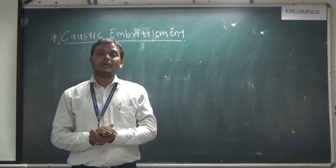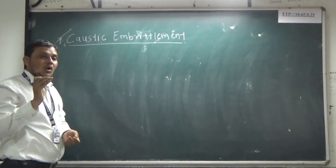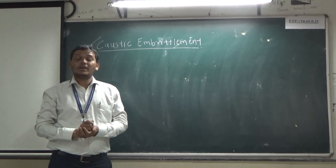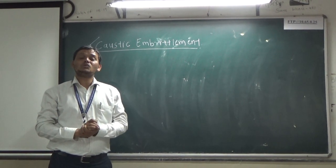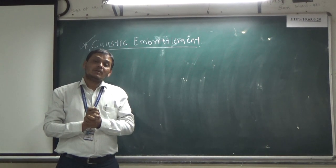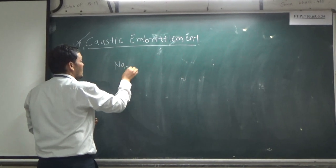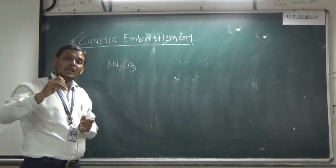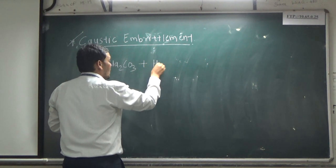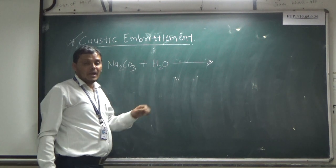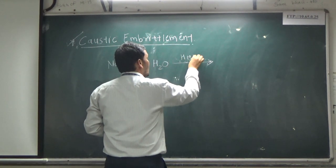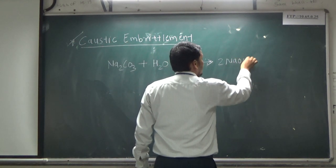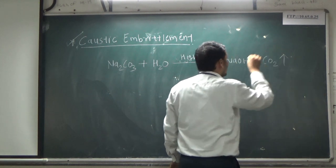Let's begin with our topic: caustic embrittlement. Caustic embrittlement is caused due to highly alkaline conditions of the water. For softening of water, we can use soda-lime water, which contains sodium carbonate (Na₂CO₃). The unreacted sodium carbonate undergoes hydrolysis reaction at very high pressure — sodium carbonate plus water — resulting in the formation of sodium hydroxide (NaOH) and carbon dioxide. This develops highly alkaline conditions.